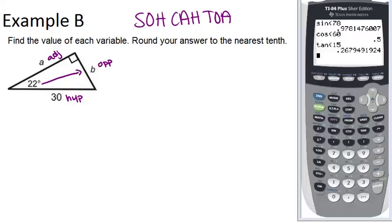So first, let's solve for B. So we're going to use the 22 degree angle, B, which is the opposite side, and 30, which is the hypotenuse. So the ratio that deals with opposite and hypotenuse is sine.